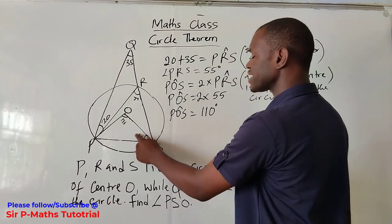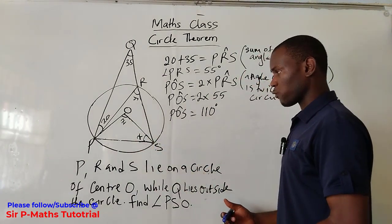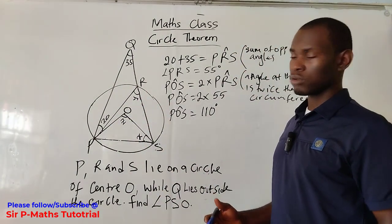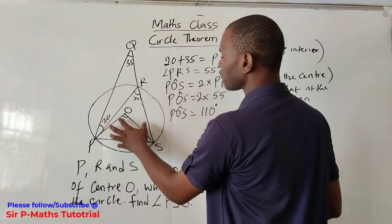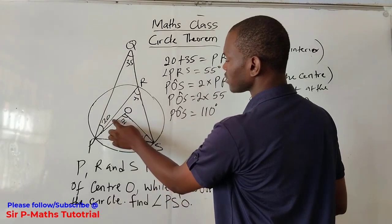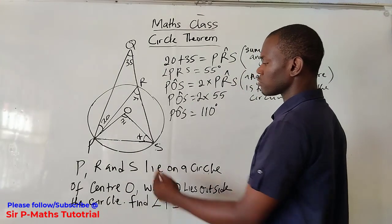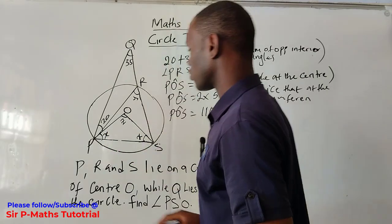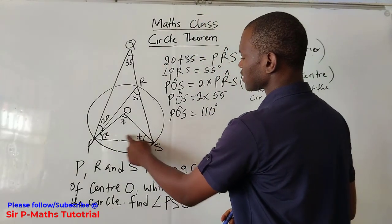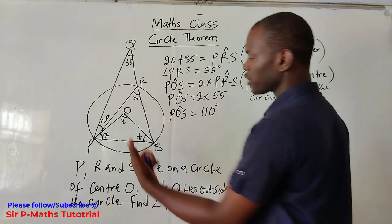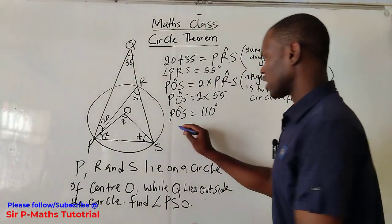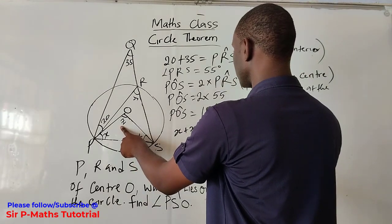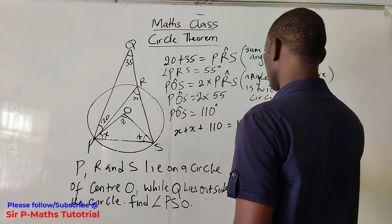Next, to get the angle we are actually looking for — take note that these are both radii, and the radii of a circle are all equal. Therefore I have an isosceles triangle here, so the angle here and the angle here are equal. I can name them both x. If I add x, x, and z (which is 110), I'll get 180 degrees.